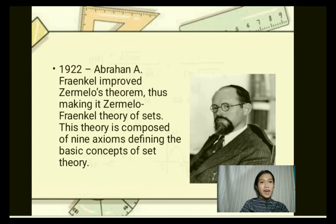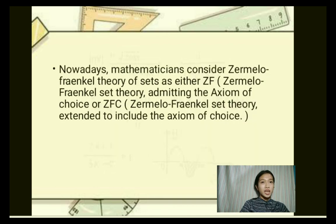In 1922, Abraham Fraenkel improved Zermelo's theorem, thus making it Zermelo-Fraenkel's theory of sets. This theory is composed of nine axioms defining the basic concepts of set theory. Nowadays, mathematicians consider Zermelo-Fraenkel's theory of sets as either ZF, Zermelo-Fraenkel's set theory without the axiom of choice, or ZFC, Zermelo-Fraenkel's set theory extended to include the axiom of choice.